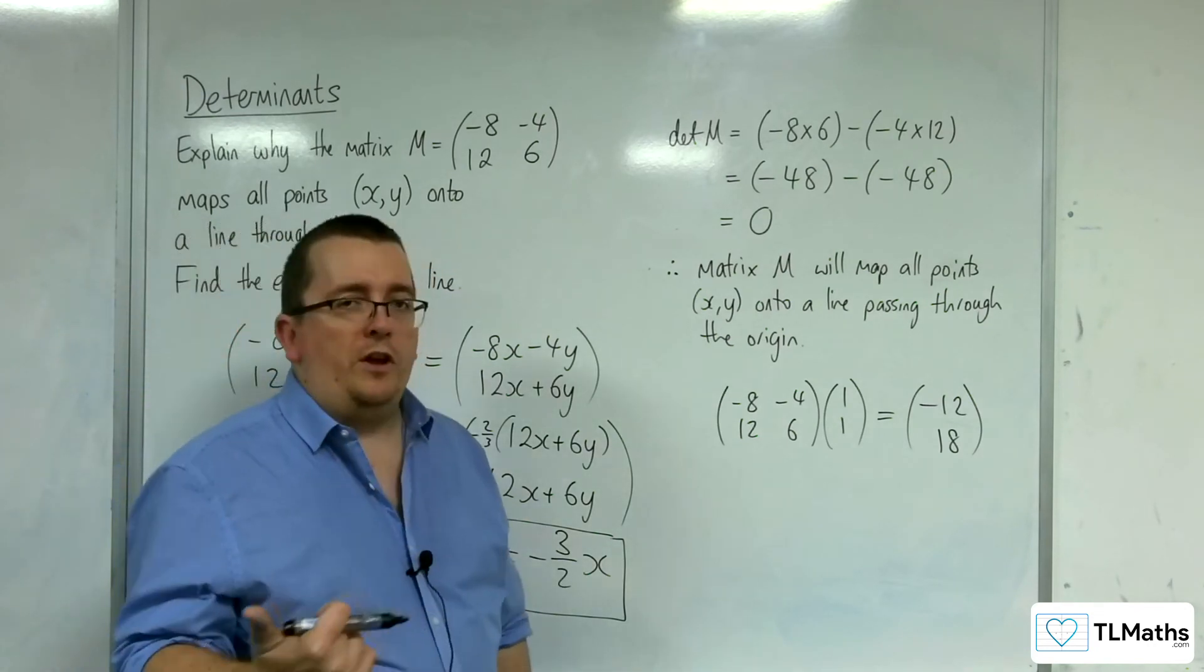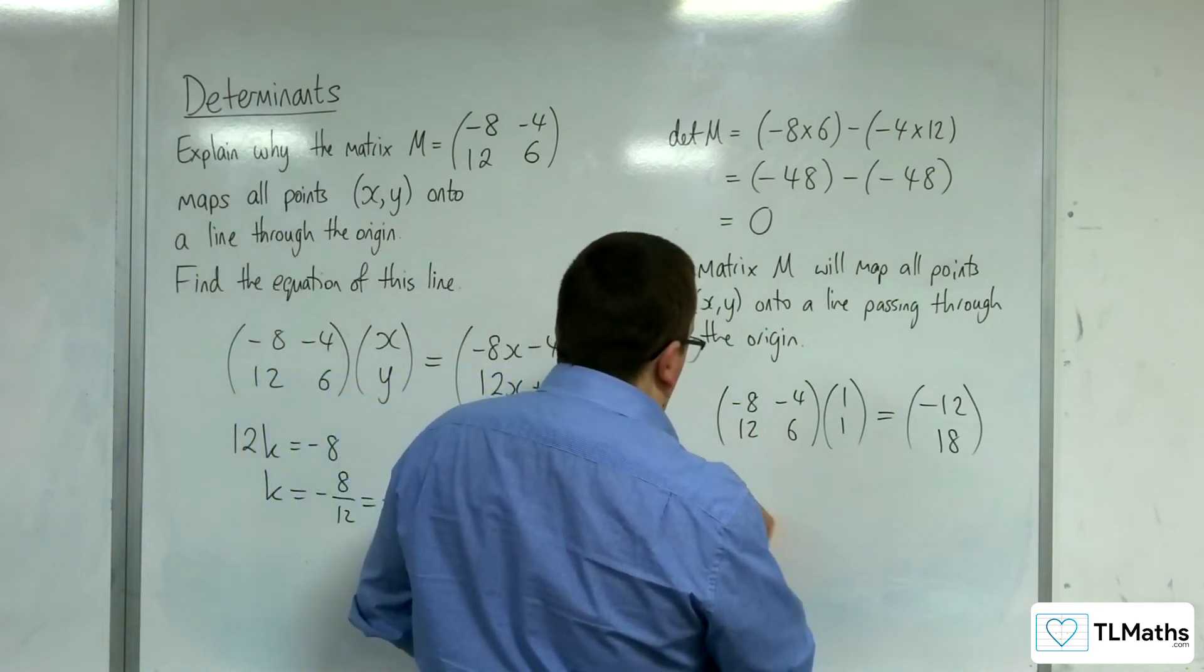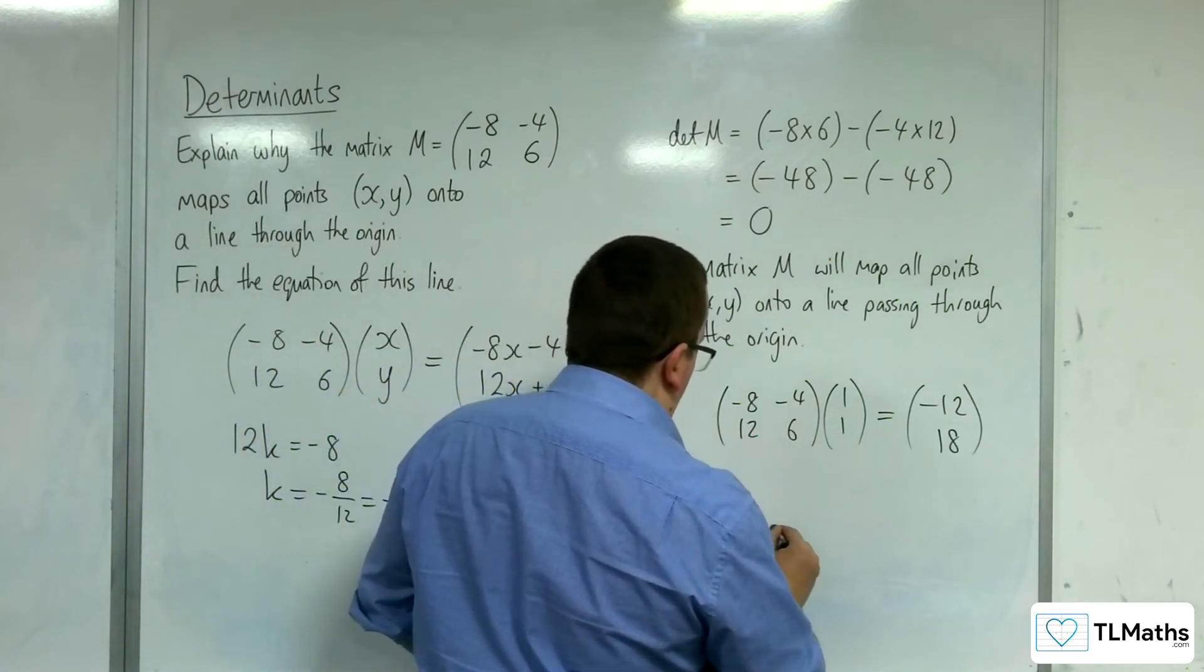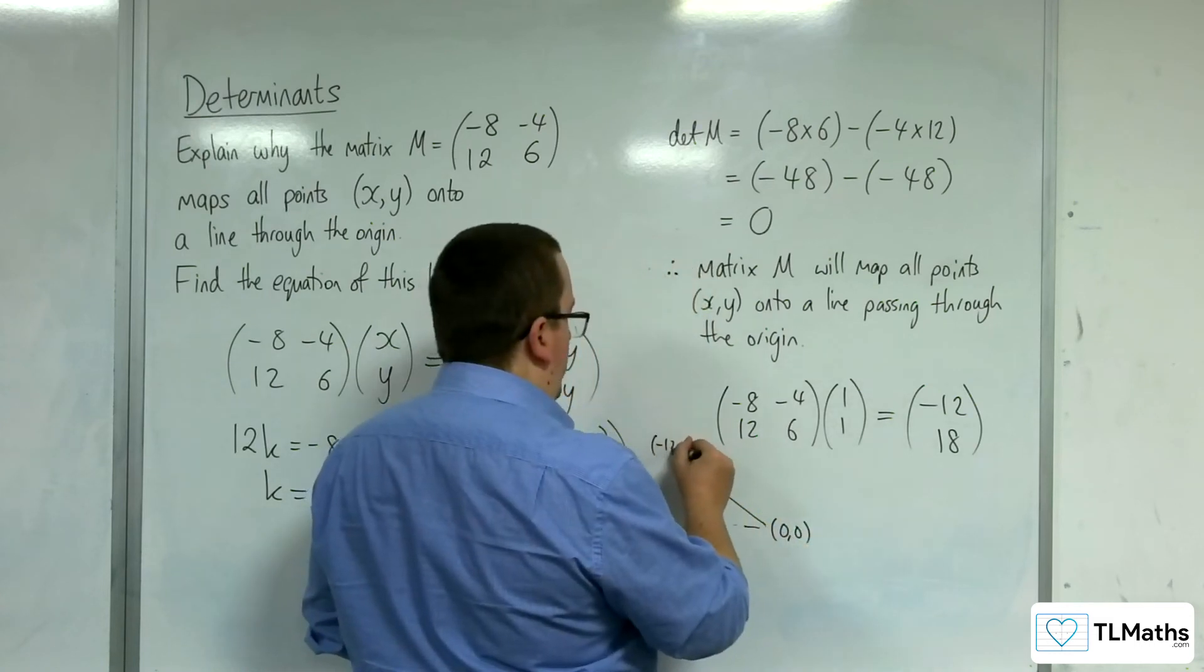I know one, it's the origin. The other point is minus 12, 18. So, it's a line that is going through the origin, 0, 0, and the coordinate minus 12, 18.